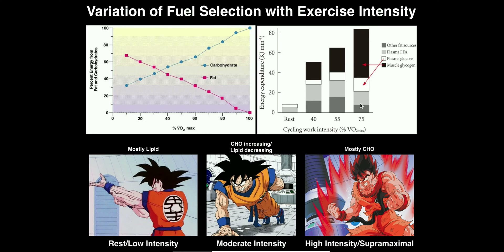This is much more easily visualized at 75% VO2 max. If we look at the area of this bar occupied by the black and the white — muscle glycogen and plasma glucose respectively — it's well over 50% of the area of the bar. So as we're increasing exercise intensity up to 75% of our VO2 max, the majority percentage-wise of that energy is coming from carbohydrate, and a much smaller percentage is coming from fat. The really important point is that as you go up in exercise intensity, the percent contribution of carbohydrate increases and the percent contribution of fat decreases.